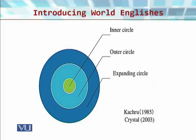The outer circle includes countries where English has an official or institutional purpose, for example countries like Singapore, India, and Pakistan. Mostly these are post-colonial nations. The expanding circle includes countries where English has no official or institutional use and is only learned as a foreign language in classrooms, such as Japan and China.